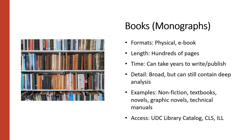If you think about something like Maus, it could be used as a primary source because it is an interview — a son talking to his father about the father's experience in the Holocaust, illustrated with anthropomorphic animals. So novels may not necessarily seem like a primary source, but many times they can be used as such, as long as you're aware of how you're using them. Ways to access books: check our UDC library catalog. You can also get them through our consortium loan service, CLS and interlibrary loan. If you only need one chapter or section, you can request a digitization of a portion of a book through that service.